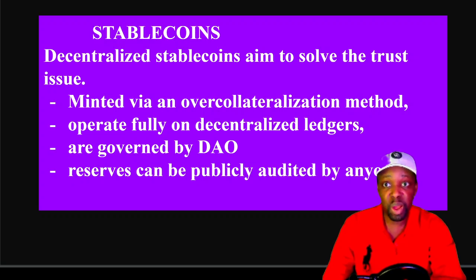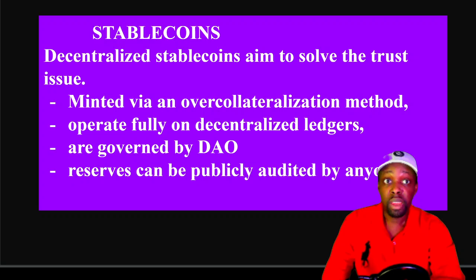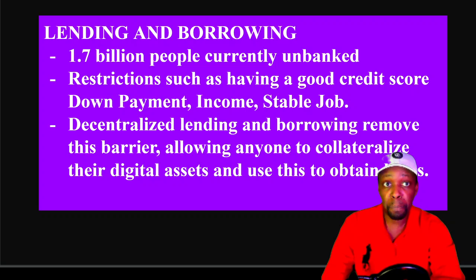Decentralized stable coins solve this problem by minting coins collateralized by other assets. For example, you put in some Ethereum and 50% of that collateral becomes minted as a USD coin. They operate fully on decentralized ledgers, are governed by a decentralized autonomous organization with consensus and voting, and reserves can be publicly audited by anyone because it's open source. They can also be forked or copied and improved.